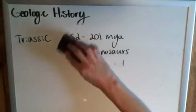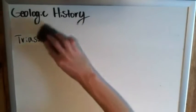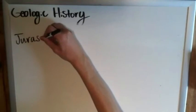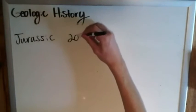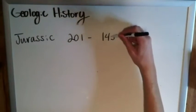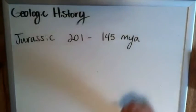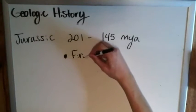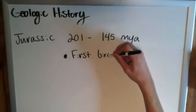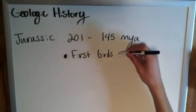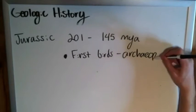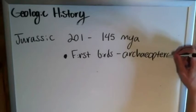Now we progress from the Triassic into the Jurassic period, and there's quite a bit of interesting information about the Jurassic. First off, it spanned from 201 to about 145 million years ago. One of the most interesting things is that we have our first birds in the late Jurassic. If you know the exact first bird, the name Archaeopteryx should sound familiar.